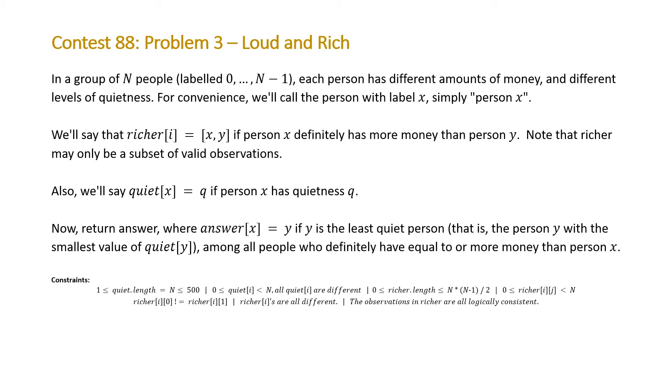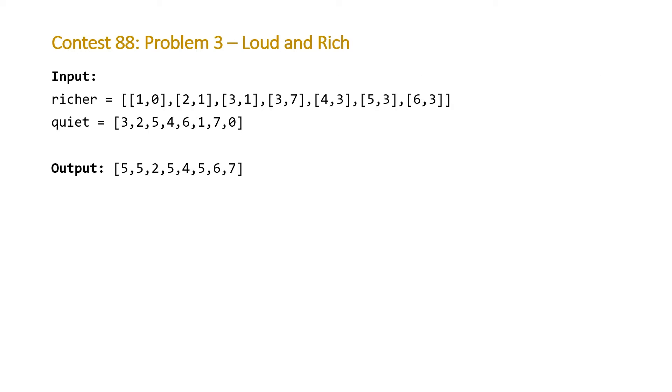Note that the length of our vector quiet will be less than 500, and all of the values are going to be different within quiet. The length of our vector richer is going to be at most n times n minus one divided by two. So let's take a look at the example that LeetCode gave us, as this is a pretty confusing problem statement, but the question isn't actually that difficult once you wrap your head around what it's actually asking.